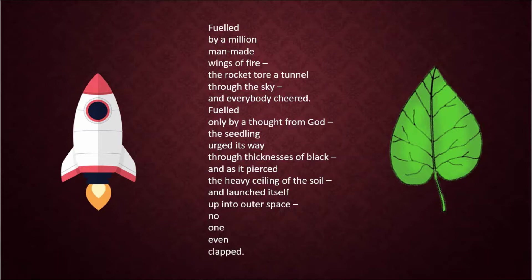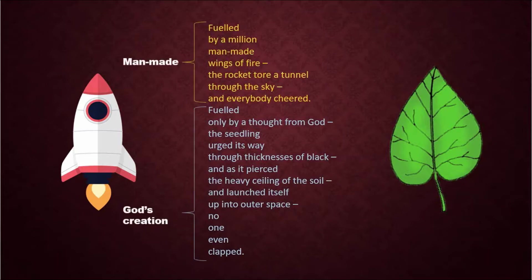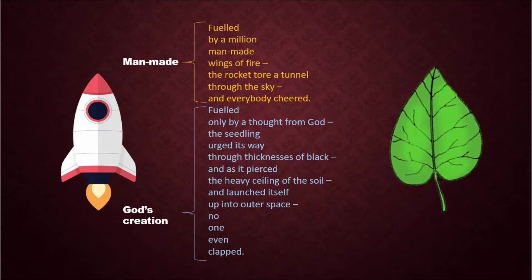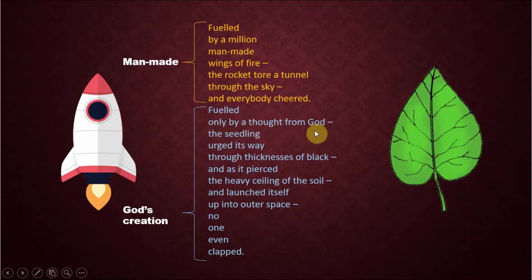Let's divide this poem into two, because it is divided into two. The first seven lines are all about how a rocket is made, how many people it took, and what happened at liftoff — we can see that the rocket is a man-made creation. The rest of the poem is God's creation. There is a parallel structure: the first section starts with 'fuelled,' the second section also starts with 'fuelled.' This one tells us 'by a million,' and the other one 'by a thought from God.' So there's a clear parallel between the two sections.